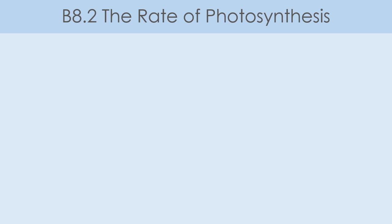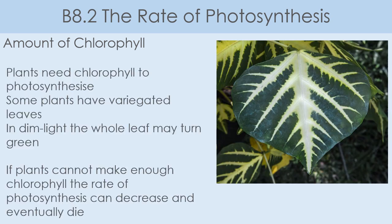Next we're going to look at the amount of chlorophyll within a leaf. Chlorophyll is the green pigment within a leaf — that's where photosynthesis happens and it absorbs sunlight. If we don't have any chlorophyll, we will struggle to photosynthesize. Some plants do not contain chlorophyll in all their leaves — they have variegated leaves with patterns, sometimes with white parts on them. Those white parts won't photosynthesize. That plant will do very well in the sun, but if put in a dimly lit area, more of the leaf will turn green to make the most of available light. If plants don't have enough chlorophyll, the rate of photosynthesis will decrease, and if it decreases too much, the plant will eventually die.